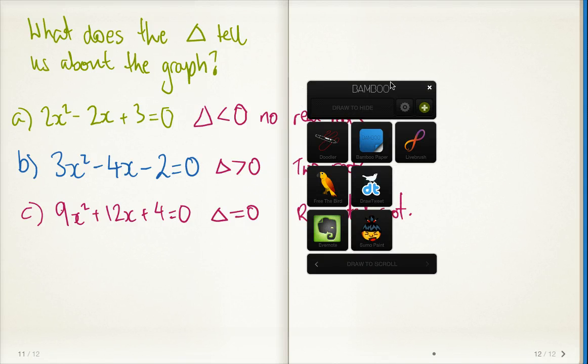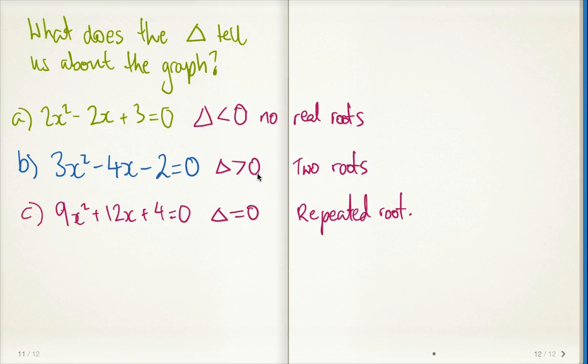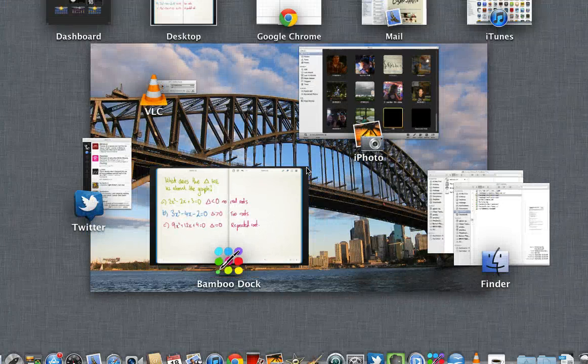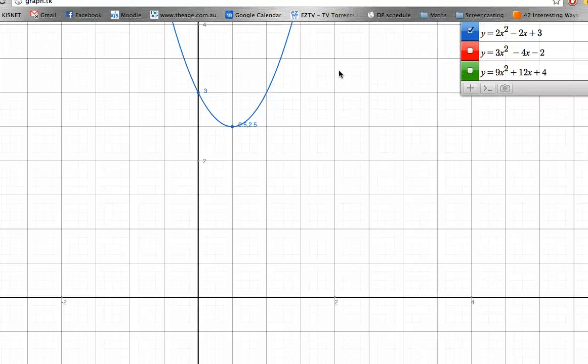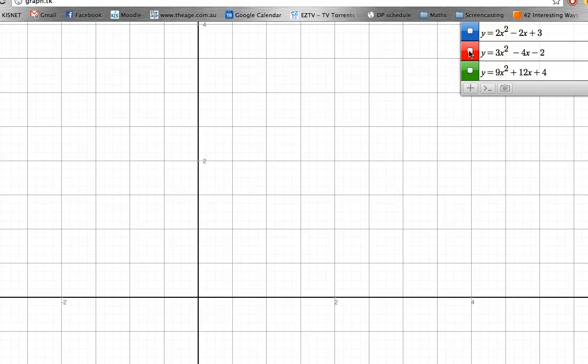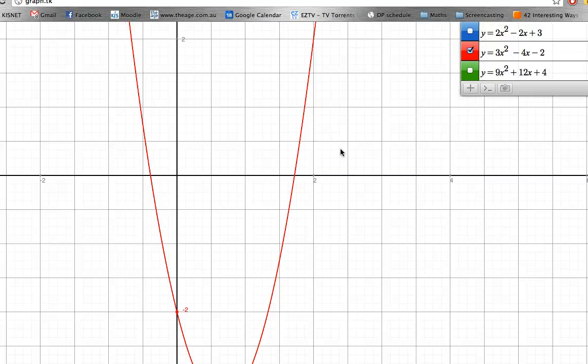Let's compare that to this function here: 3x² - 4x - 2. We've found the discriminant to be greater than 0, which tells us there should be 2 roots. So let's go over here and have a look at what that means. That's this function here, 3x² - 4x - 2.